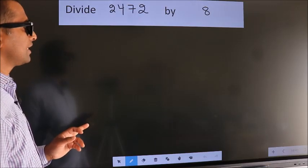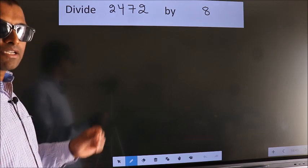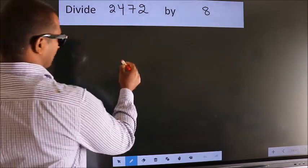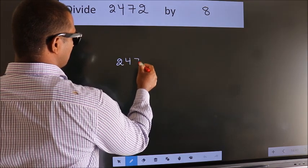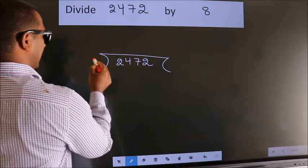Divide 2472 by 8. To do this division, we should frame it in this way. 2472 here, 8 here.